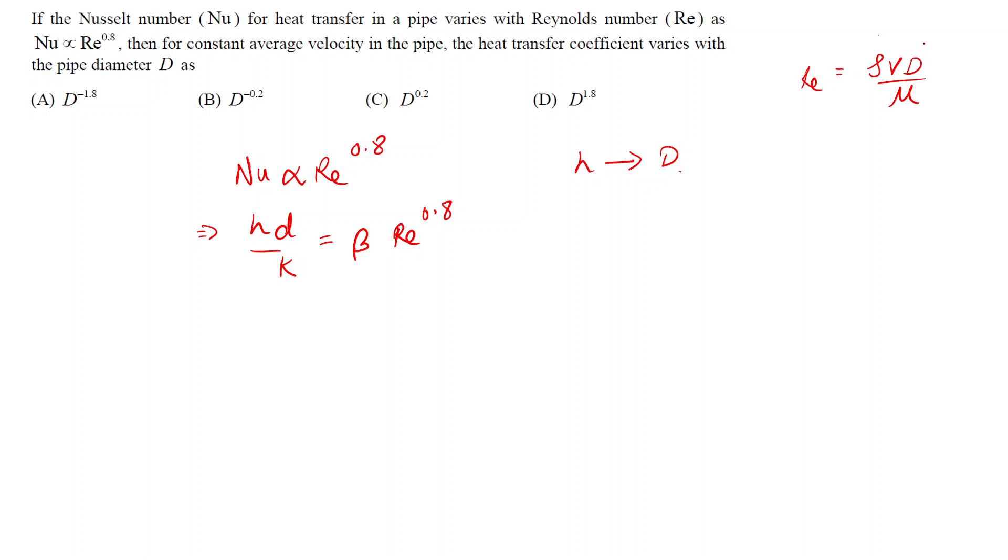V is the average velocity in the pipe and mu is the viscosity. So we can replace this value of Reynolds number: rho V D upon mu raised to 0.8 is equal to H D upon K.